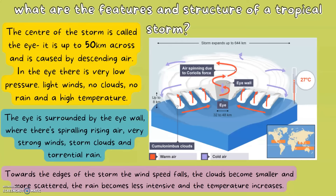The eye is surrounded by the eye wall, where there is spiralling rising air, very strong winds, storm clouds and torrential rain. Towards the outer skirts of the storm, the wind speeds fall, the clouds become smaller and more scattered, and the rain becomes less intensive as the temperature increases.